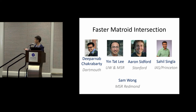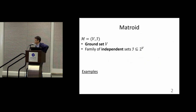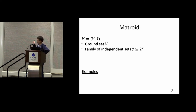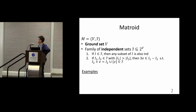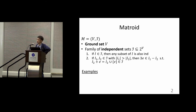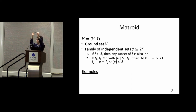This is joint work with colleagues, some of whom are in the audience today. Let me remind you about matroids. Matroids are essentially independent subsets of a ground set. The independent sets satisfy two conditions: condition one, any subset of an independent set is also independent; condition two, if you have two different independent sets you can move an element from the bigger one to the smaller one so that the smaller one with that new element is still independent.